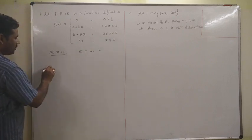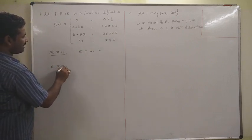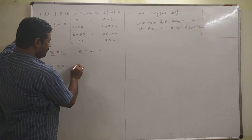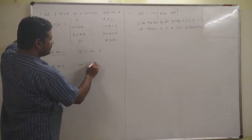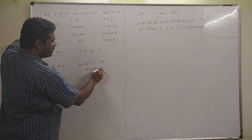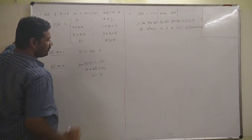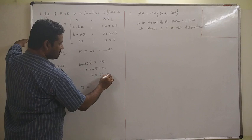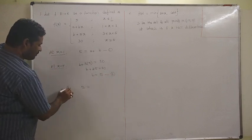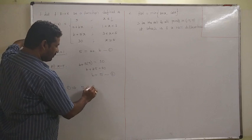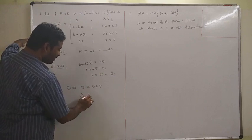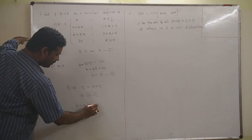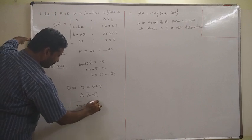Next, check at x equal to 5. At x equal to 5, we get b plus 5 times 5 equal to 30, so b plus 25 equal to 30, giving b equal to 5. Substituting into the first condition a plus b equal to 5, we get a equal to 0. Therefore a equal to 0 and b equal to 5.